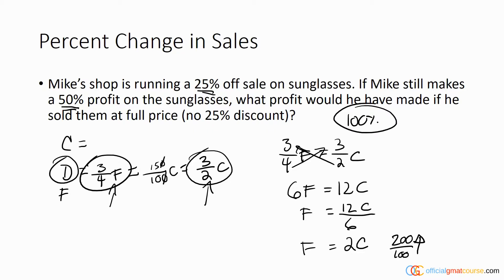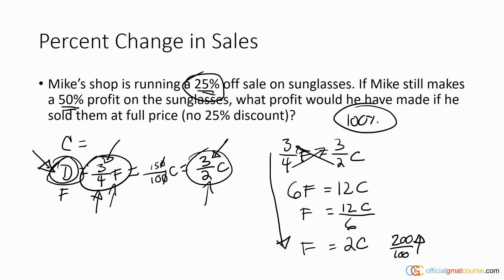That's how you work through the math. You find a bridge — in this situation it was the discount price. You represent each variable with a multiplier showing how much of that value there is as a final total. The 25% off sale gave us three quarters of full price as the discount price, and the 50% profit on cost gave us 150% of cost. Then you simply walk through the math to finish it out.